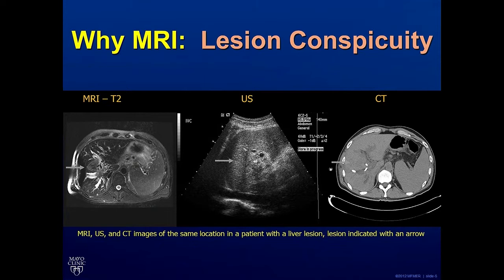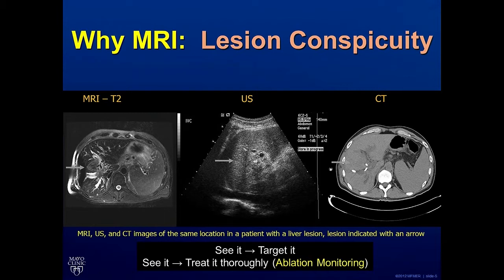This slide demonstrates how MR adds to the ability to see a lesion. Here you see on the left side a clearly seen tumor within the liver, which is not small. When you look at the ultrasound and CT images, you cannot see this tumor at all. Therefore, the MR allows us to see it, target it, and when we're ablating it, ensure that we're ablating the entire tumor.